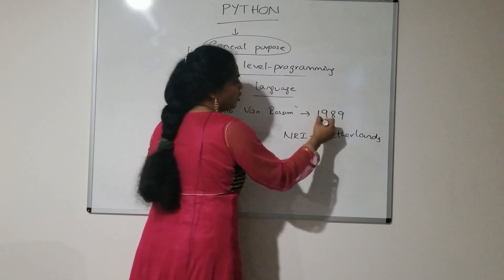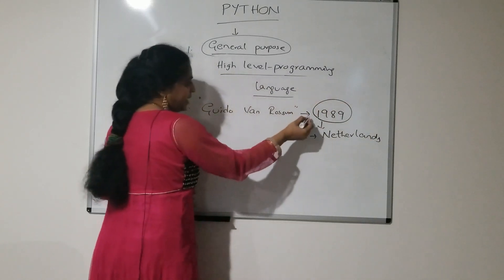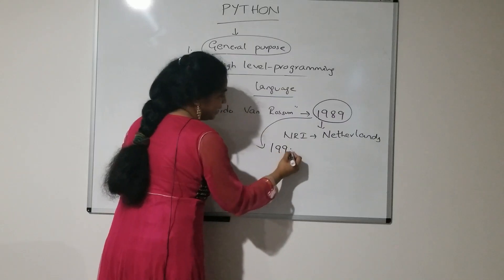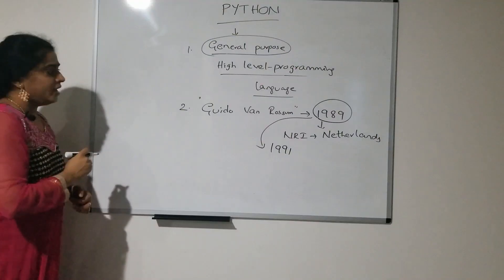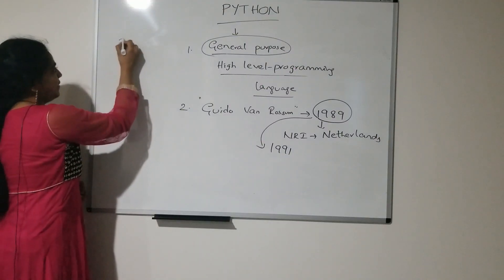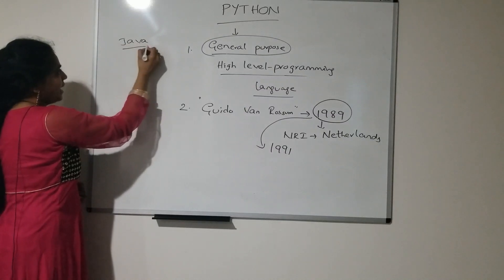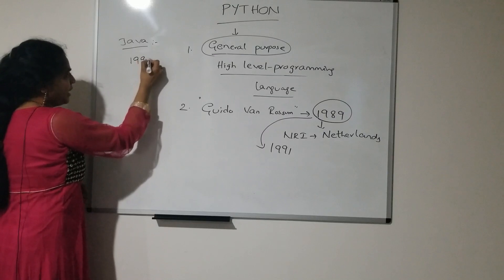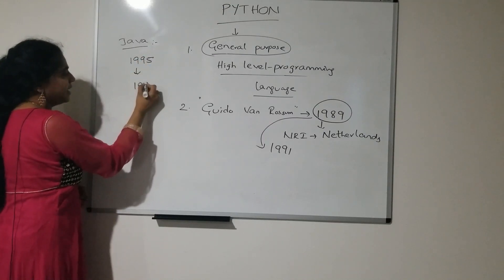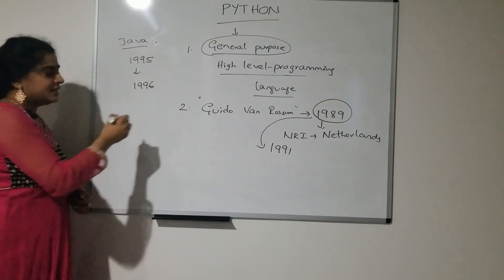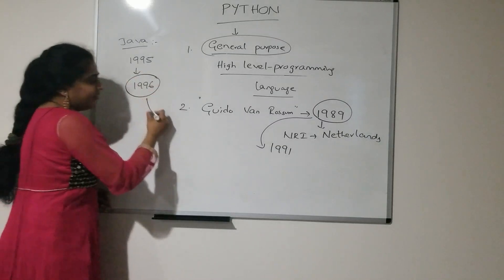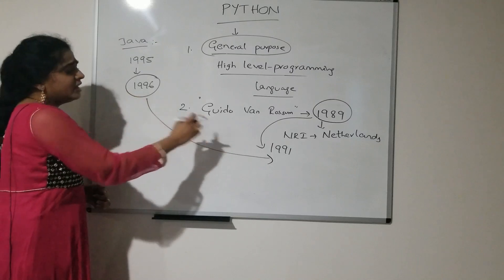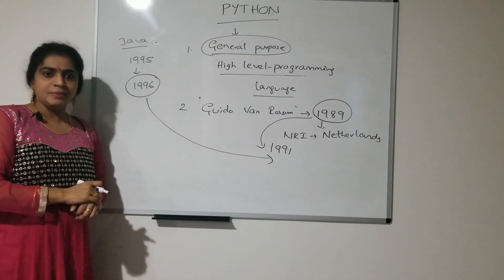Even though he developed this language in 1989, Python came to the outside environment in the year 1991. Consider Java — Java was introduced in the year 1995 and came to the outside environment in 1996. That means, before Java itself, we already had Python language in the market.